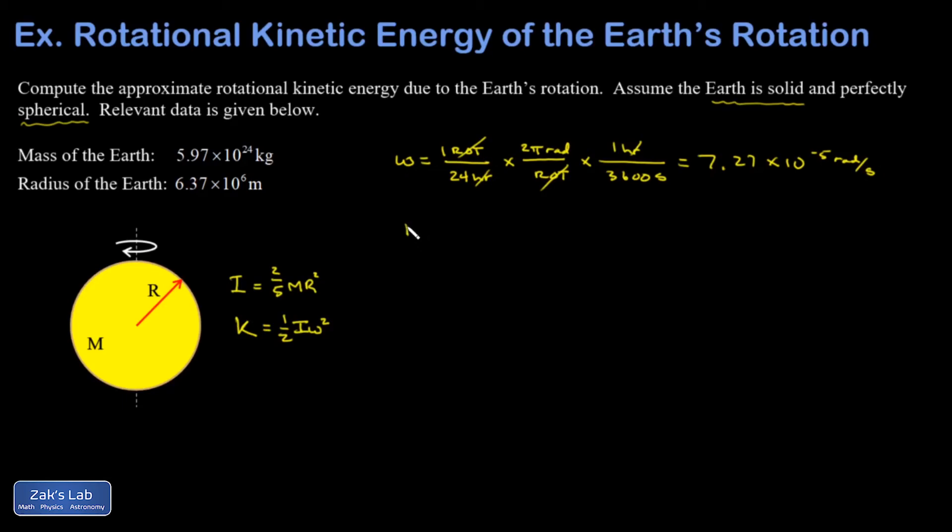Okay, let's work on the moment of inertia. I is two-fifths times the mass times the radius squared. And I get 9.69 times 10 to the 37 kilogram meters squared.